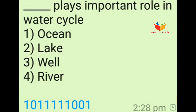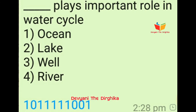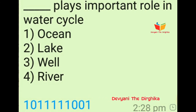Question number nine: Dash-dash plays an important role in water cycle. Option number one is ocean, option number two is lake, option number three is whale, and option number four is river. The answer is option number one, ocean.